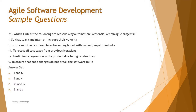Statement one: so that the team maintains or increases their velocity. This looks good and is true. To maintain velocity, you need to do more work in less time. Automation boosts productivity — the more manual work you do, the slower the pace. Given automation in agile projects helps you deliver faster, and each iteration requires more and more regression testing, doing it manually would be very tedious.